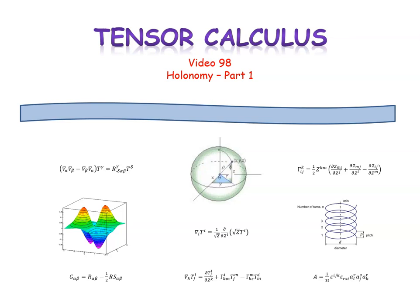This is video 98 in our series on tensor calculus. In this video, we'll introduce the topic of holonomy. Holonomy is the effect that is observed when we parallel transport a vector around a closed loop on a surface.